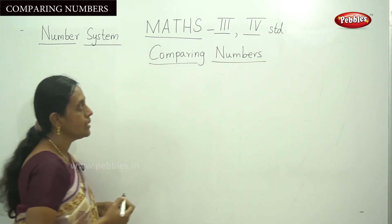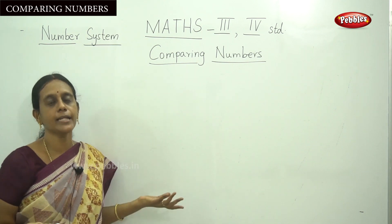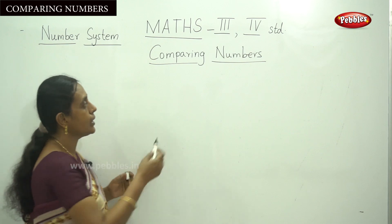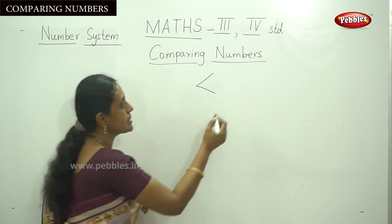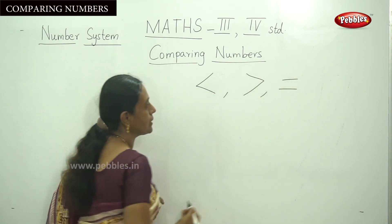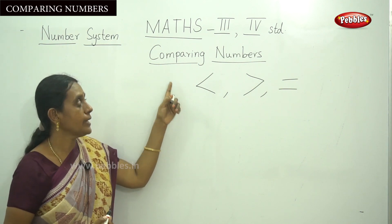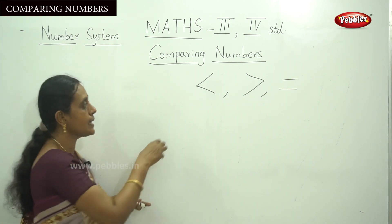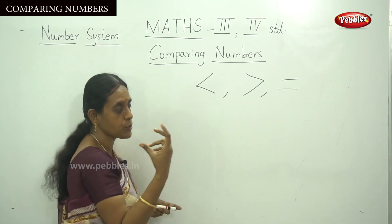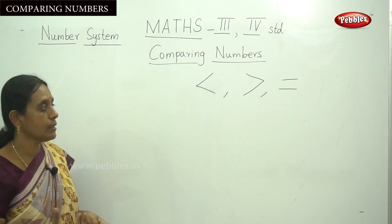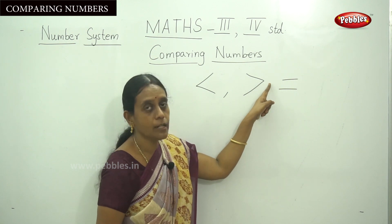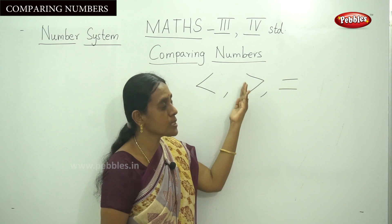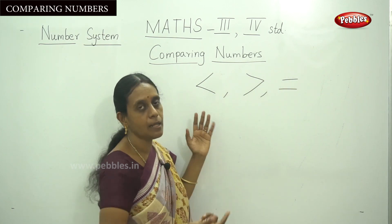Comparing numbers — comparing means whether it is the smaller one or the greatest number. We are using some signs. For greater and lesser: this is a lesser sign, and this is a greater sign, and this is an equal sign. So three sign languages are used in comparing numbers: less than, greater than, and equal to. The arrow shows the smallest portion on one side and the bigger, greater number on the other. Equal sign means both sides are equal.